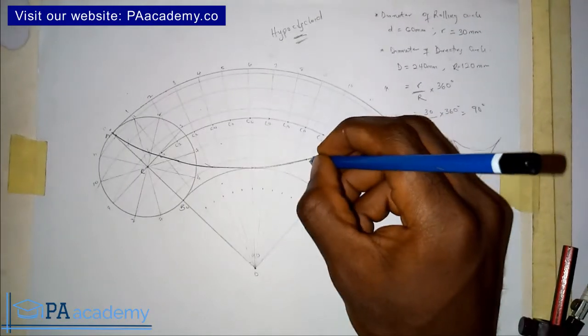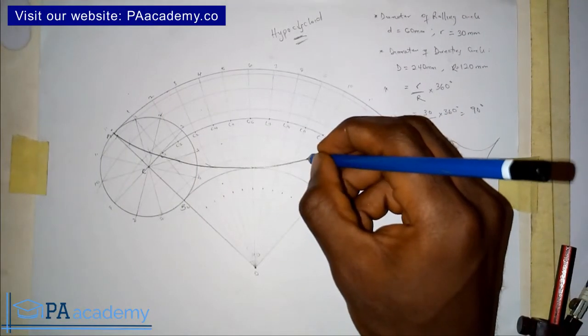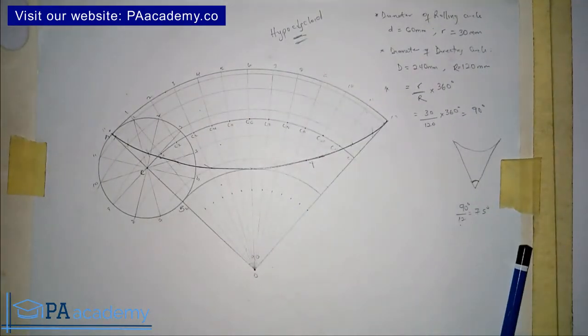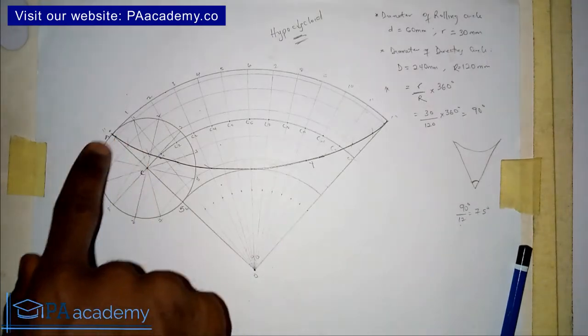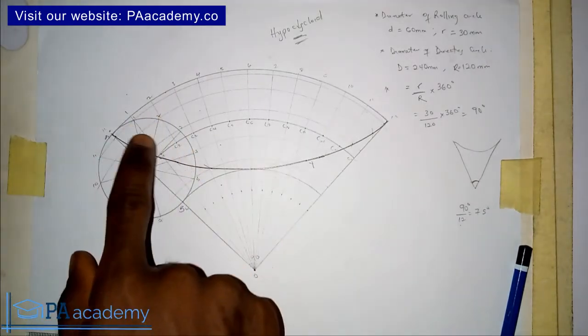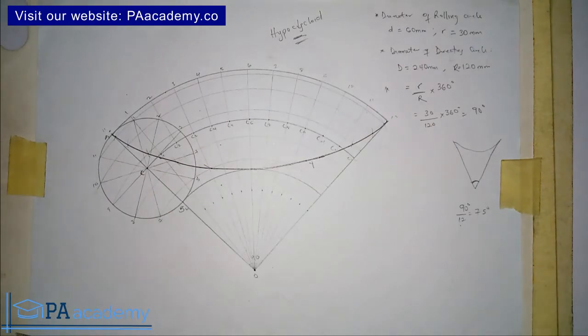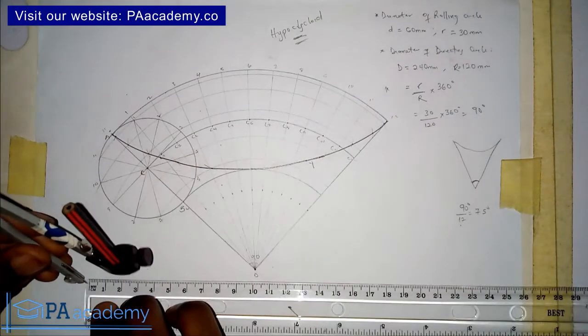I've noted this as point Y. This is where I want to have my tangent. Now that I've already noted that side, the next thing I'm going to measure is the radius of this circle, that is the rolling circle, which is 30 millimeters. So I'm going to bring my compass and my ruler and measure it.